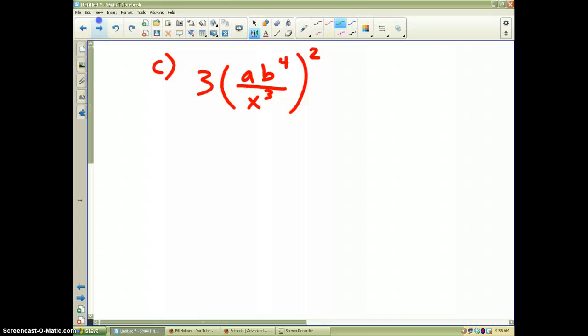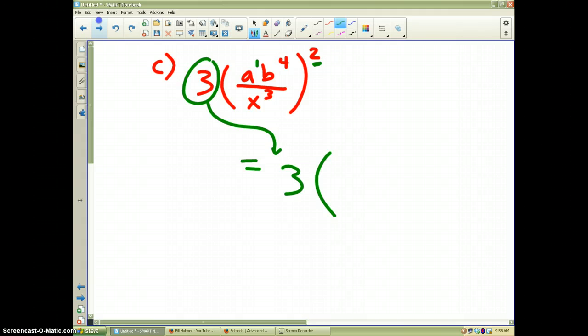Okay. The 3 is outside the parentheses. The 2 does not apply to it. The 3 comes down. A to the first power squared would make A squared. B to the fourth power squared would make B to the eighth. And that's in the numerator. And in the denominator, x to the third power squared would make x to the sixth.